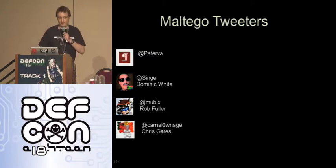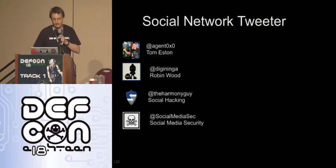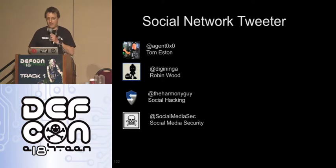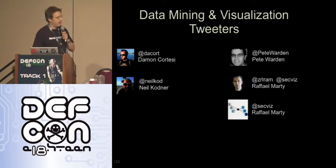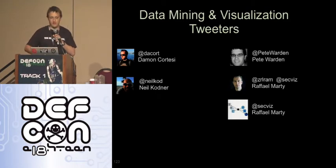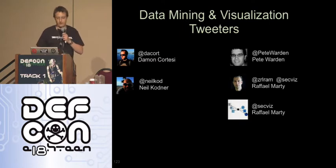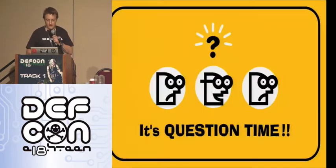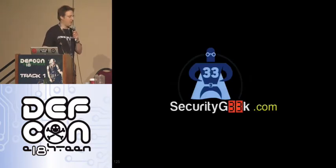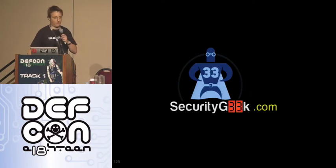If you're on Twitter and want to see who's tweeting about Maltego: follow @Paterva, @Singe, Nubix, and Colin Lonej — they're all far smarter than I am. Social network tweeters: Tom Eston, Robin Wood, Agent 0x0, DigiNinja — they did the Social Zombies talk. Harmony Guy — follow him, he's awesome. Data mining and visualization: Damien Cortese, Neil Codner. Pete Warden is the dude who nearly got sued by Facebook, and Rafael Marti and secviz.org are awesome resources. That's about all I've got. The white paper with all references is on my website. Thank you.